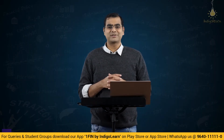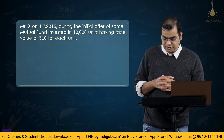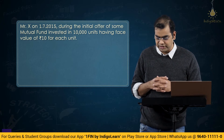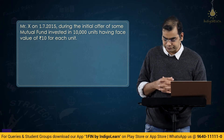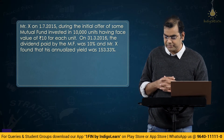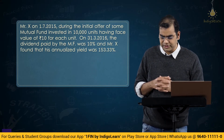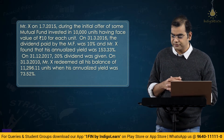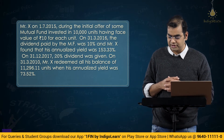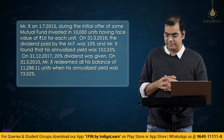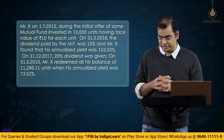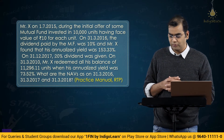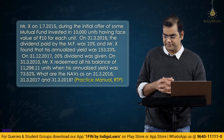Now let us look at the next problem. Mr. X on 1st of July 2015, during the initial offer of some mutual fund, invested in 10,000 units having face value of 10 rupees each. On 31st of March 2016, the dividend paid by the mutual fund was 10% and Mr. X found that his annualized yield was 153.33%. On 31st of December 2017, 20% dividend was given. On 31st of March 2018, Mr. X redeemed all his balance of 11,296.11 units when his annualized yield was 73.52%. What are the NAVs on 31st March 2016, 31st March 2017, and 31st March 2018?